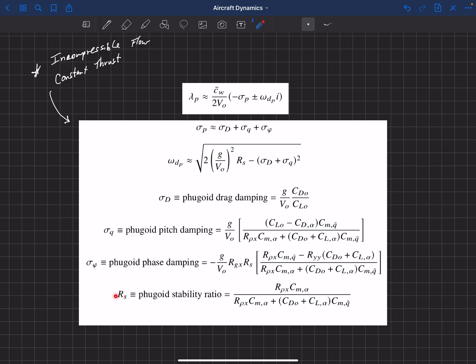He also has this term called the fugoid stability ratio, and actually the fugoid phase damping depends on this fugoid stability ratio. It's this ratio here, and that shows up not only in the total damping, but also in the frequency. You can see that shows up right here. The frequency depends on the stability ratio as well as the drag and the pitch damping terms.